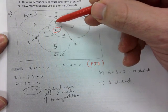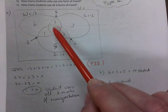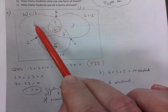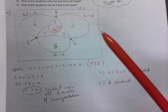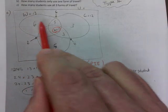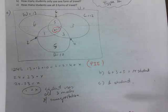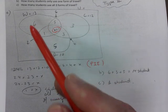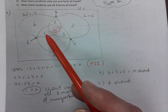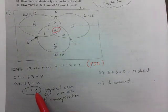Plug x back in to fill out the rest. The pairwise-only sections become 3, 5, and 1 respectively. Subtracting all inner values from each circle total gives you the single-mode regions: 6 walk only, 3 cycle only, 5 drive only. How many use exactly one form? Add those three. How many use exactly two? Add the pairwise-only sections. How many use all three? That's 1. I hope this helped — see you next time.